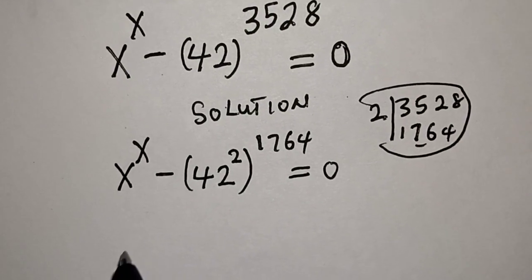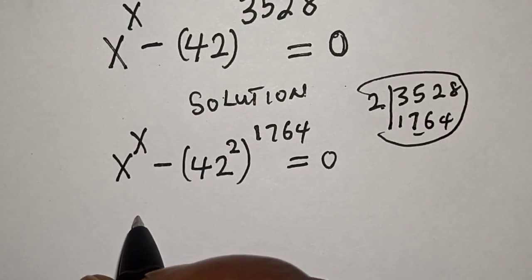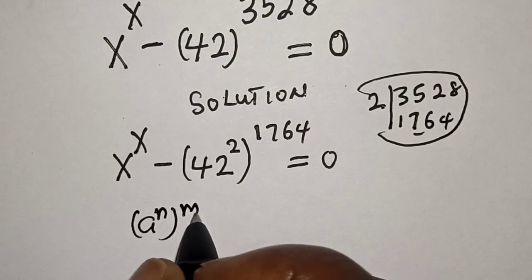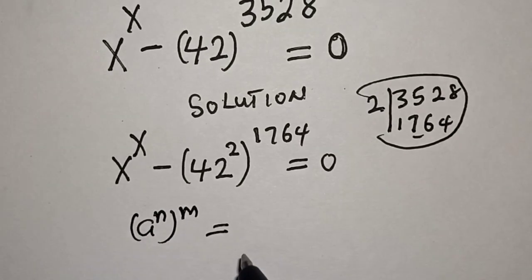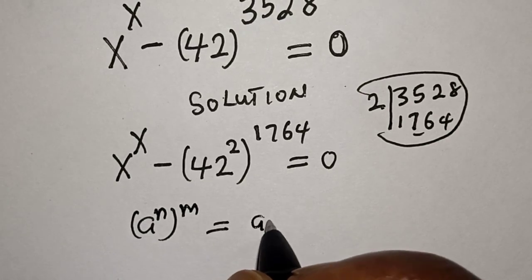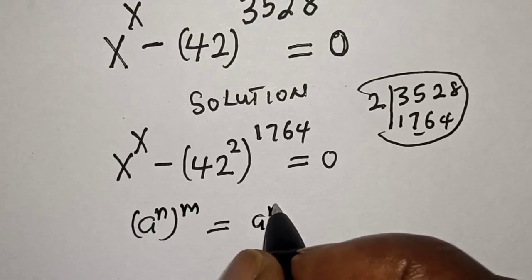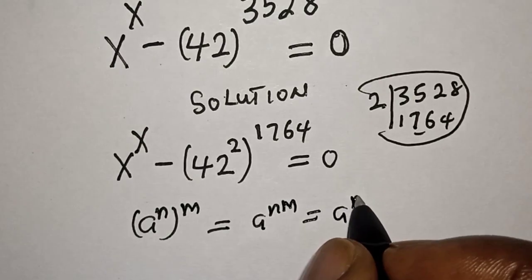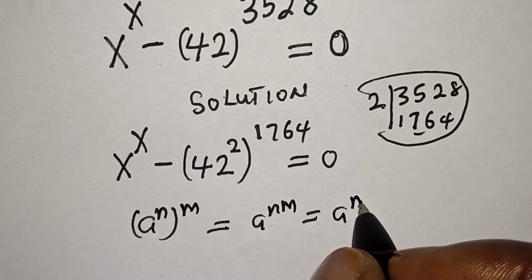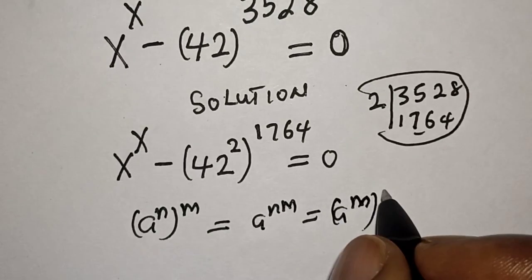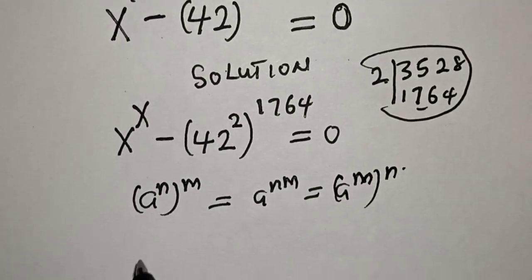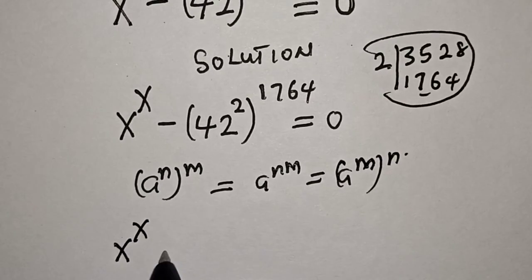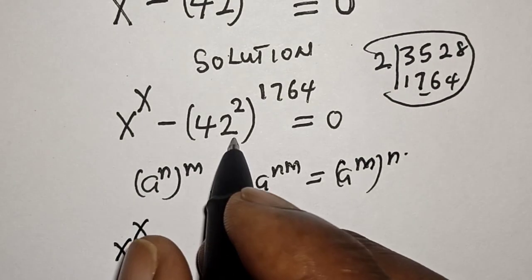Remember this rule: a raised to power n, raised to power m, is equal to a raised to power n times m. This gives us x raised to power x minus 42 squared.